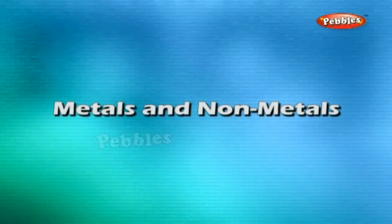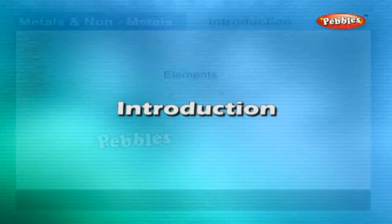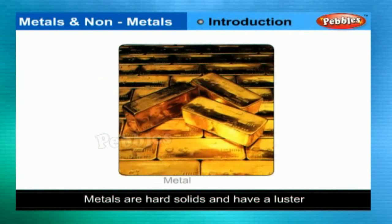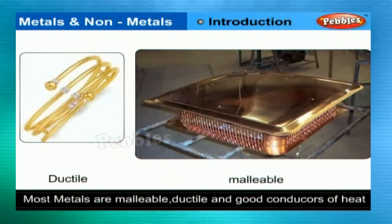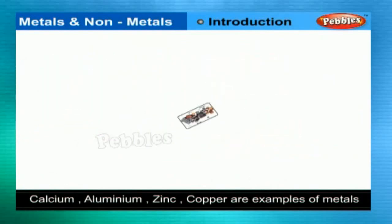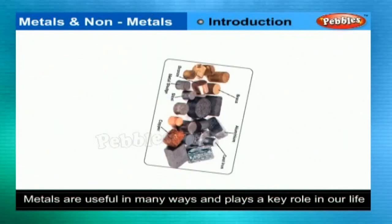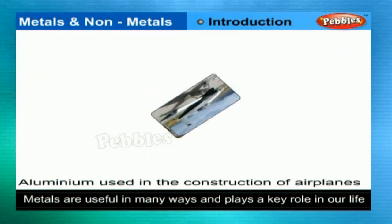Metals and non-metals — Introduction. Elements are classified as metals and non-metals. Most of the metals are malleable, ductile, and some of them are good conductors of heat. Calcium, aluminium — metals are helpful to us in many ways. We use them in the construction of houses, automobiles, and in electrical applications.